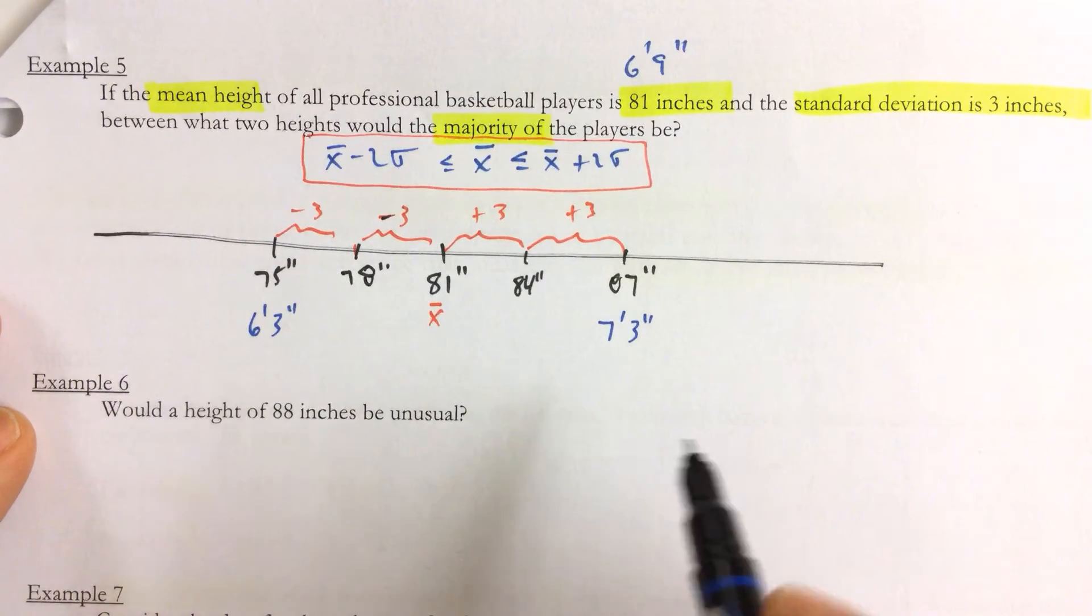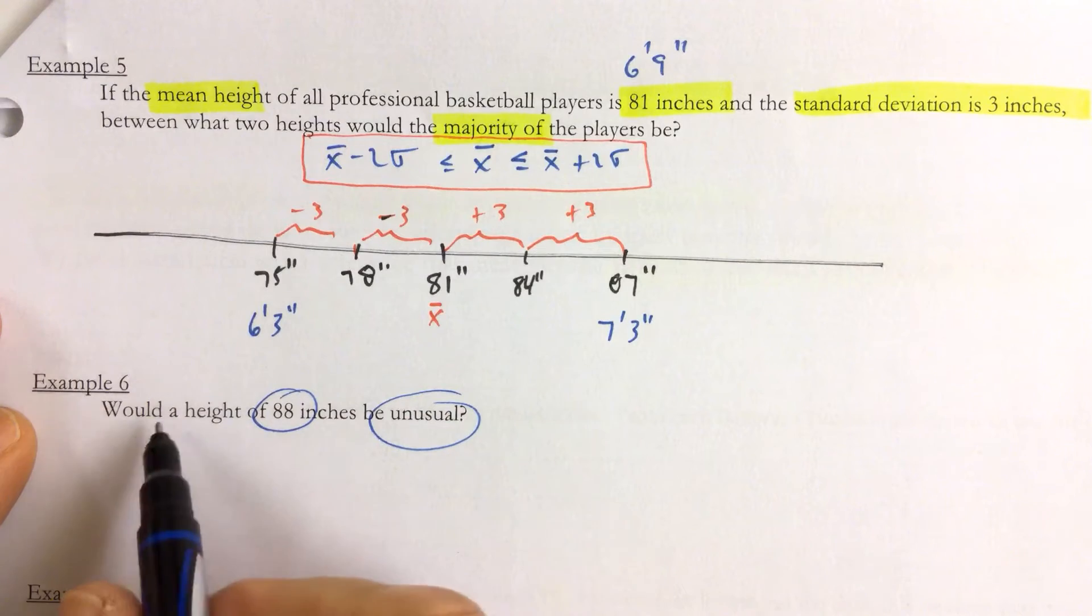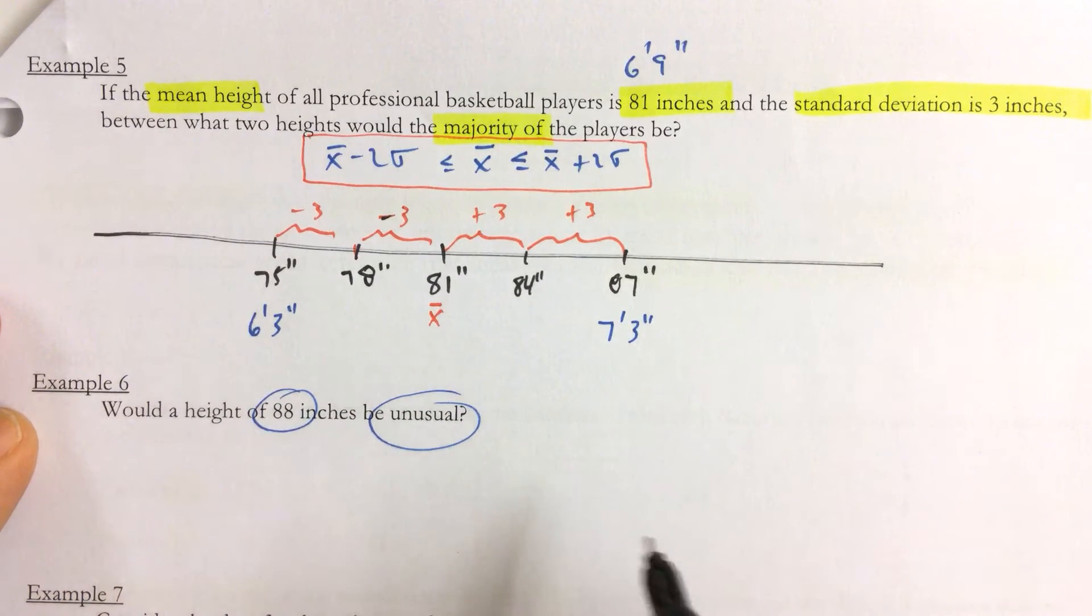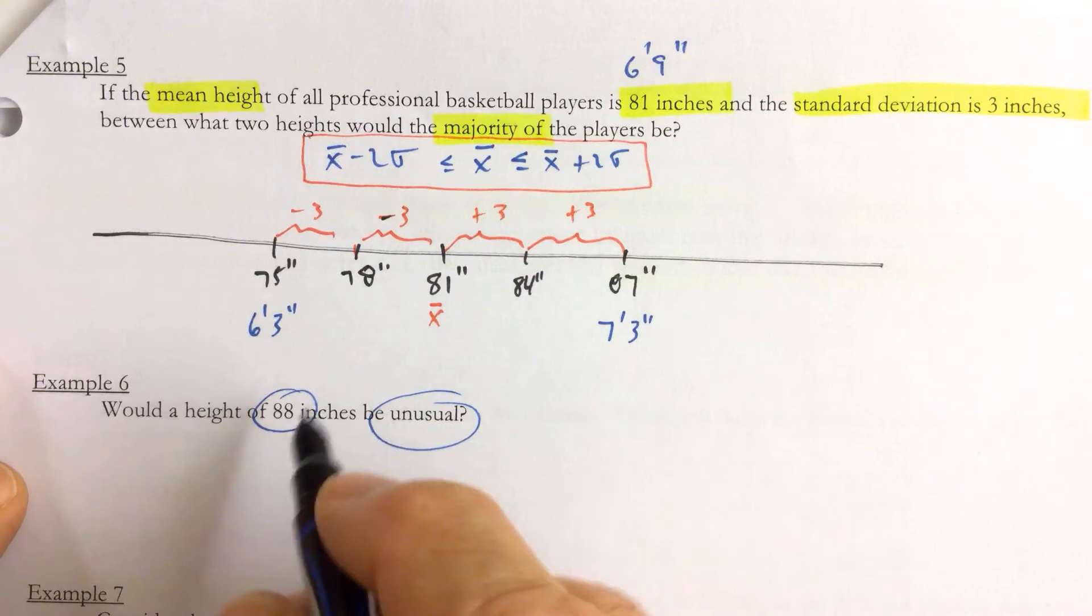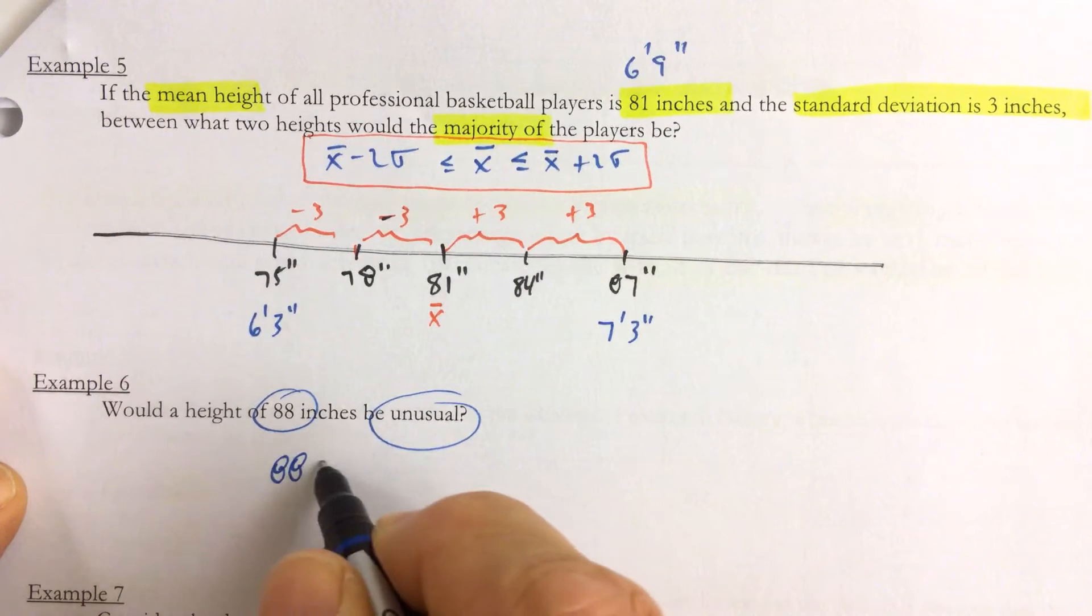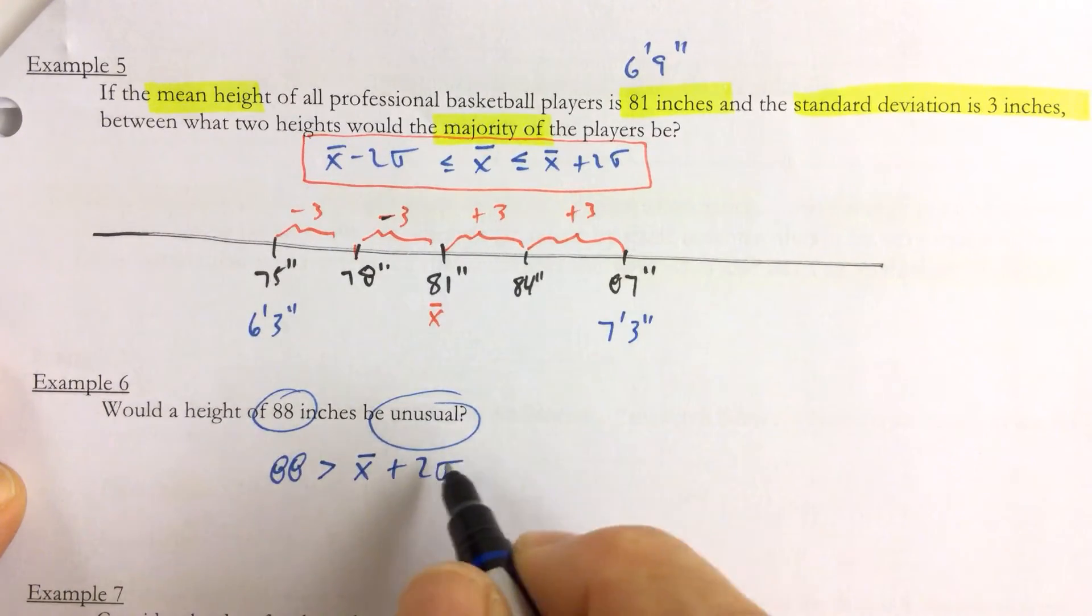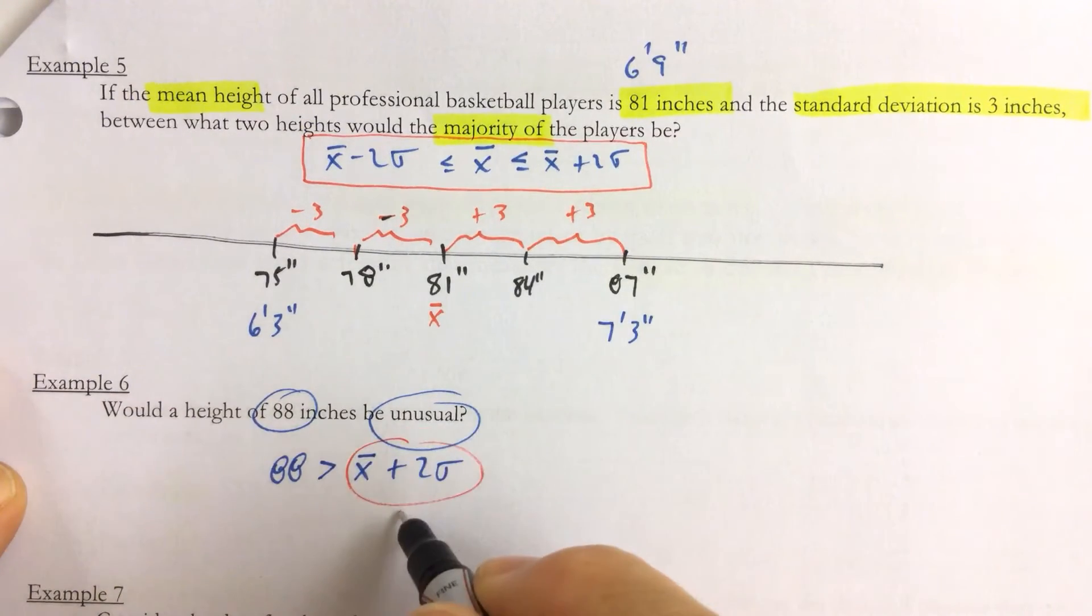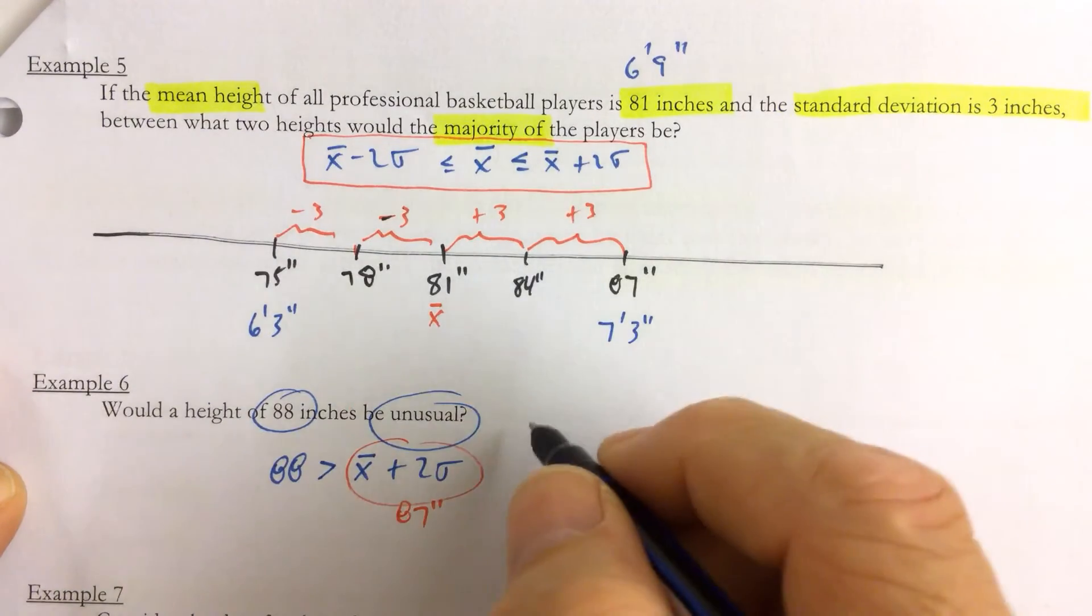And outliers would lie outside the usual range. So would a height of 88 inches be unusual? Well, 88 inches is outside—88 inches is greater than the mean plus two standard deviations. And the mean plus two standard deviations, that's 87. So we would say yes, yes.